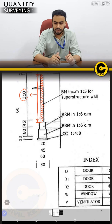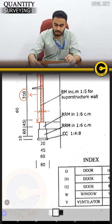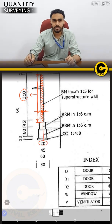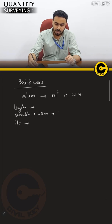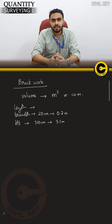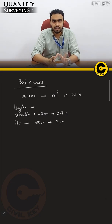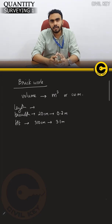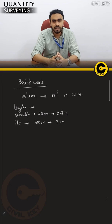We have the thickness — the width of the wall. Now we have the total centerline length.